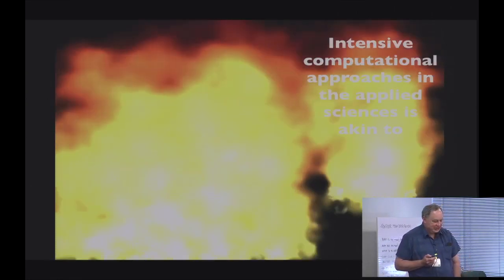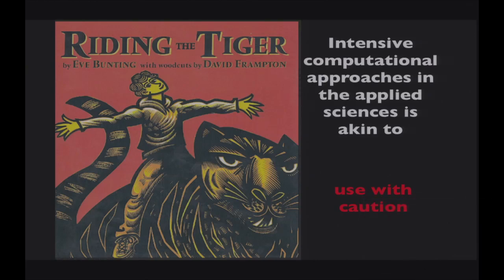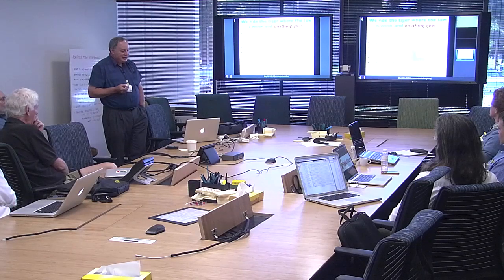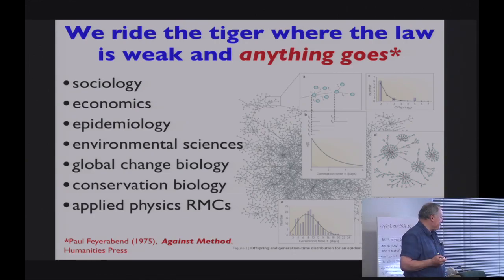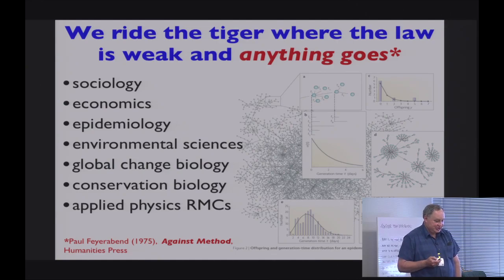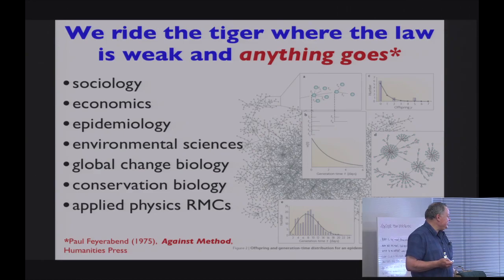In the field of intensive computational approaches in applied sciences, Wayne likens it to riding the tiger—computational models can be very dangerous if you don't know what you're doing. In fields like computational population biology, there's a lot of unsatisfactory work happening. The Berkeley philosopher of science Paul Feyerabend's book Against Method is referenced: without the guidance of physics laws, applied fields put together ad hoc narratives. NOVA is going to help make it science.